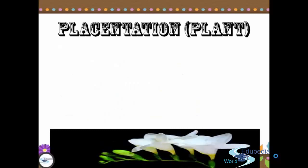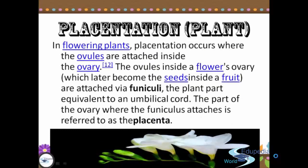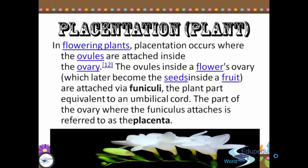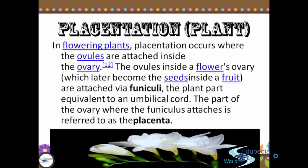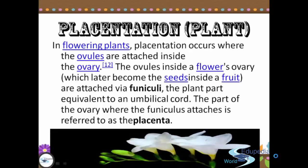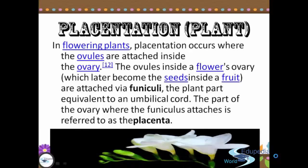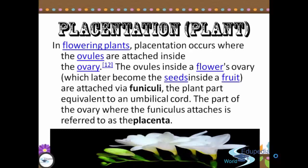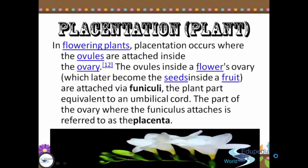Placentation in plants, also in flowering plants, occurs when the ovules are attached inside the ovary. The ovules inside the flower's ovary, which later become the seeds inside a fruit, are attached via funiculi, the plant part equivalent to an umbilical cord. The part of the ovary where the funiculus attaches is referred to as the placenta.